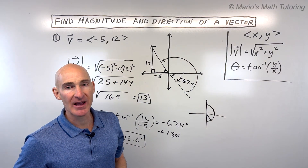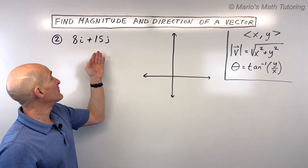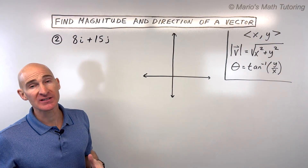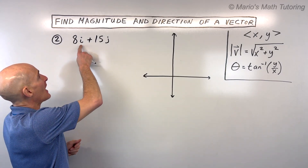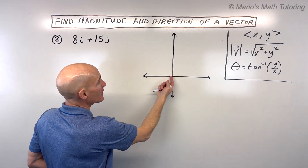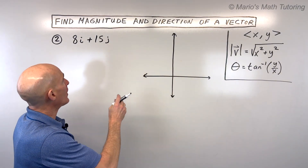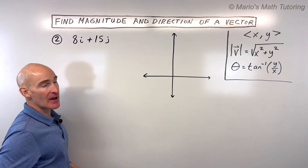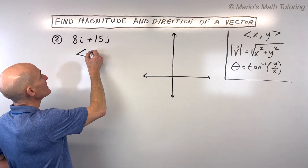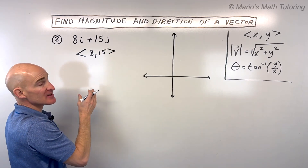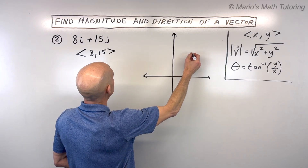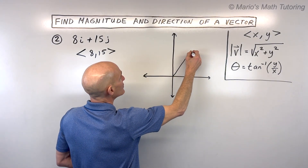Let's take a look at the next example. For example number two, we have the vector 8i plus 15j. This is a linear combination of standard unit vectors, where i is a vector in the x direction that's one unit long, and j is a vector in the y direction that's one unit long. I prefer to write it in component form with triangular brackets: 8 comma 15. But they represent the same vector.